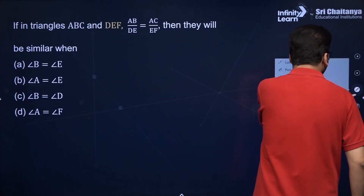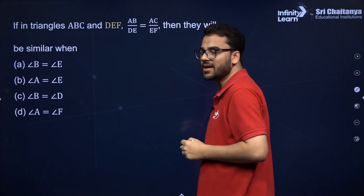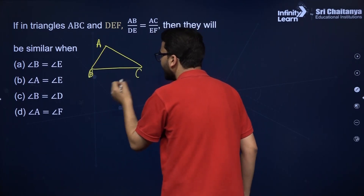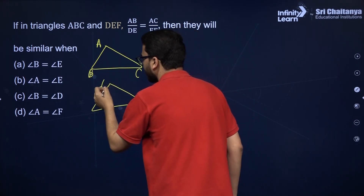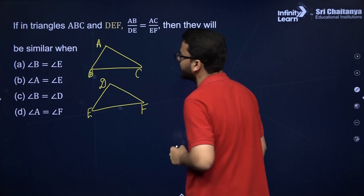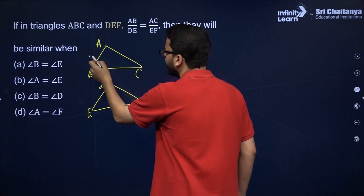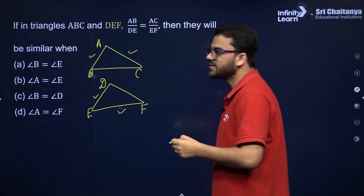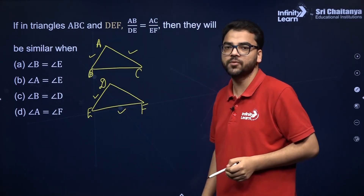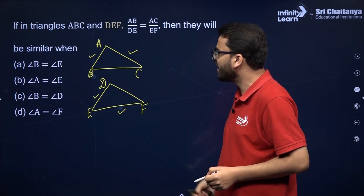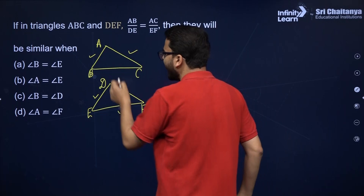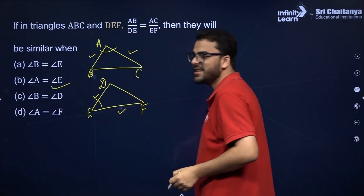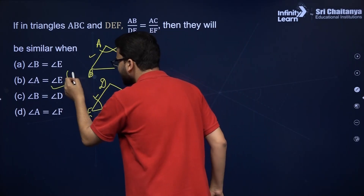Make a rough figure of triangles ABC and DEF and mark the sides. AB by DE is equal to AC by EF. These two triangles will be similar when angle A is equal to angle E. So we can say that if angle A is equal to angle E, these triangles will be similar by the SAS similarity criterion — side, angle, side.